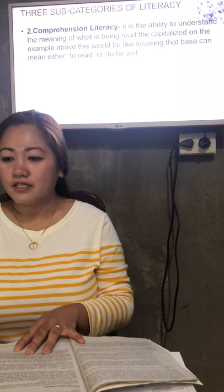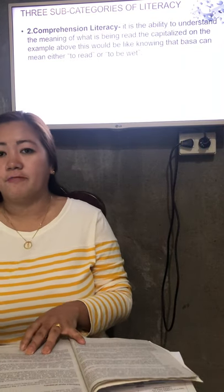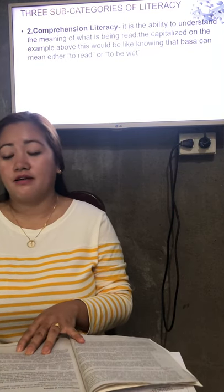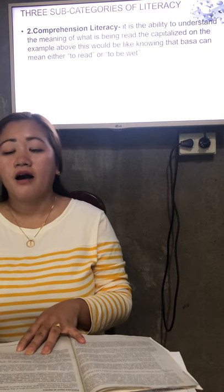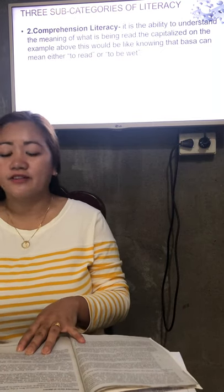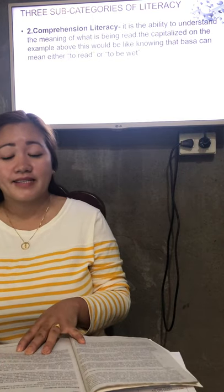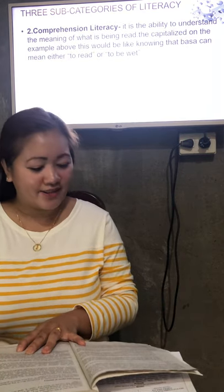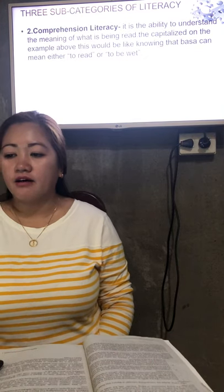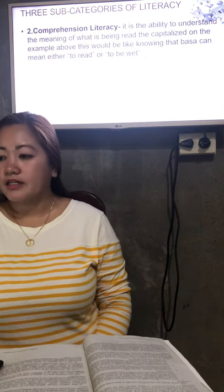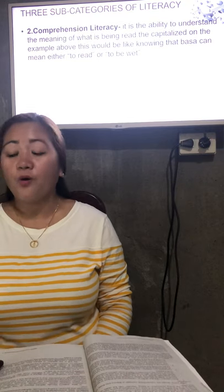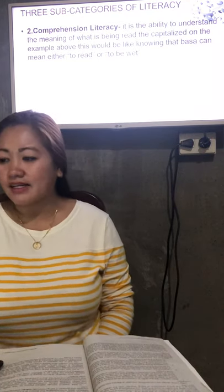Now we proceed to Number 2: comprehension literacy. There's actually a level — when you are in college, you are done with elementary where you learned the basic knowledge and skills. In high school, your comprehension increases. In college, you reach your highest level so far, though we still have master's and doctoral degrees. Comprehension literacy is the ability to understand the meaning of what is being read. For example, knowing that 'basa' can mean either 'to read' or 'to be wet' in Filipino.